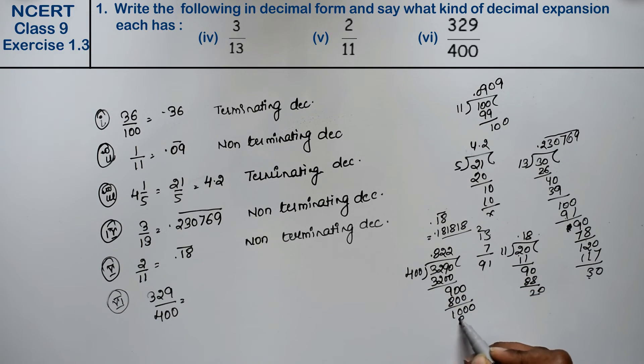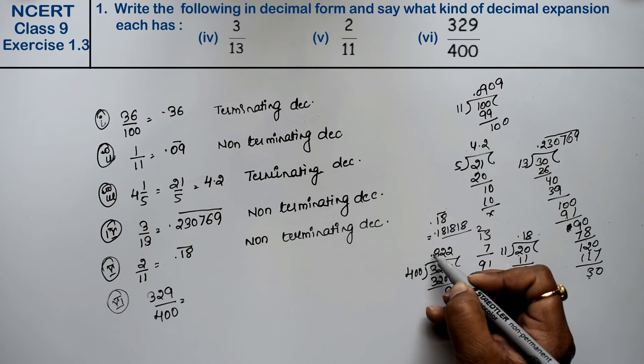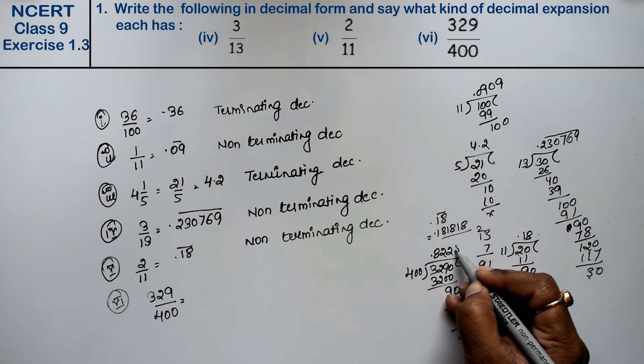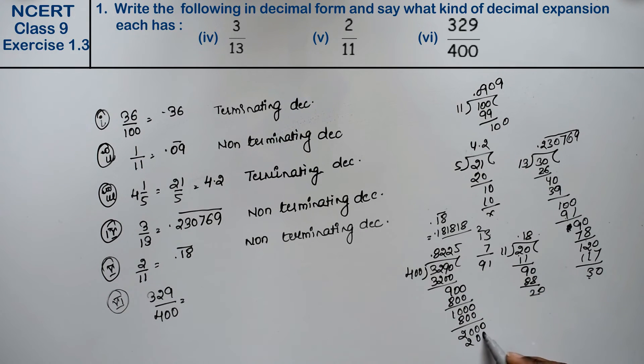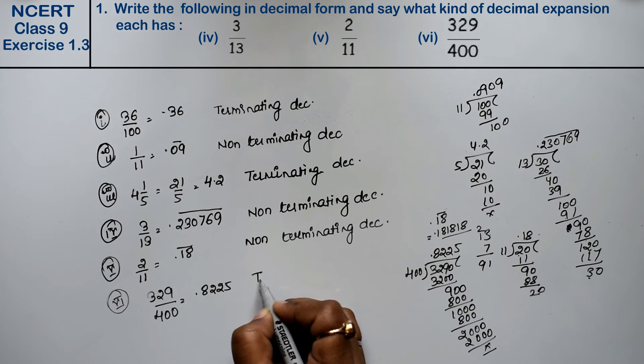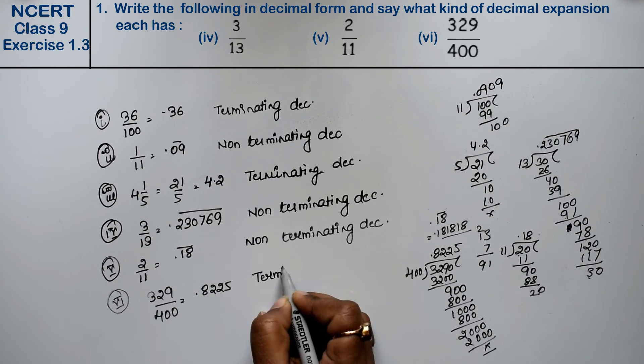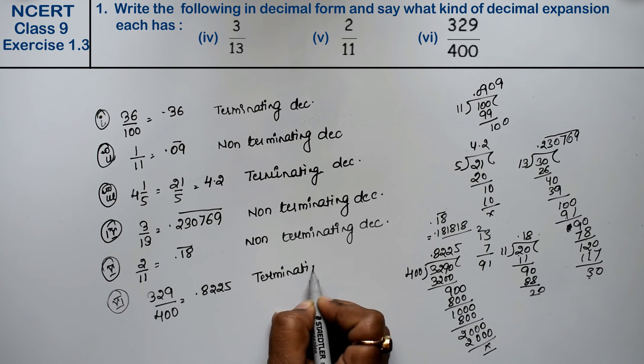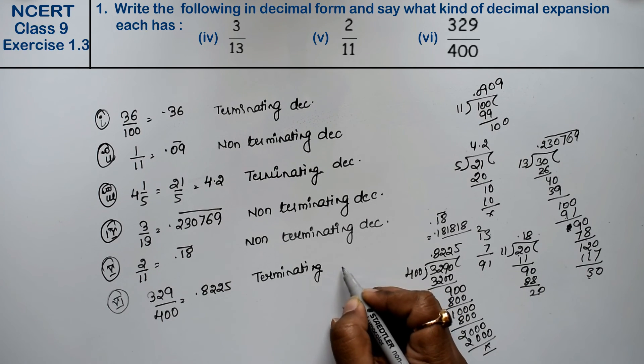200. This point, one zero. 4 fives are 20. Right friends? So this is point 8225. This is not repeating. That's why it's a terminating decimal.